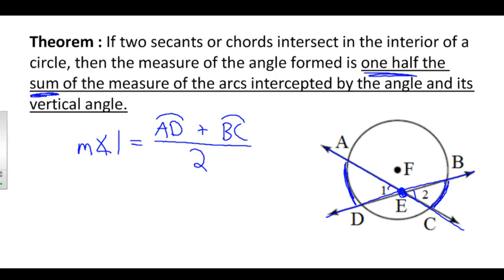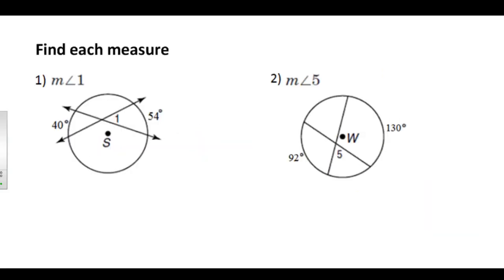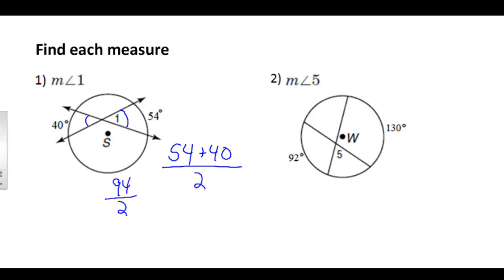Let's try a few examples with this theorem. Example number one: find the measure of angle one. Angle one's arc is 54 degrees, and I'm going to add angle one's vertical angle's arc, which is 40 degrees. I add those together and divide by two. 54 plus 40 gives me 94 over two, which is 47 degrees. So the measure of angle one is 47 degrees.